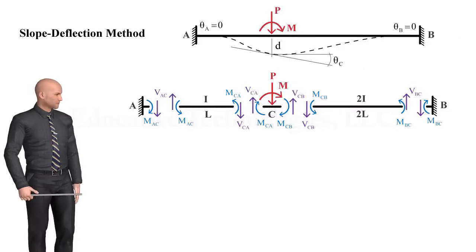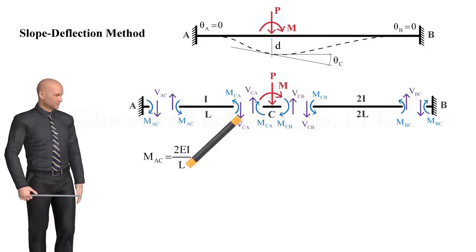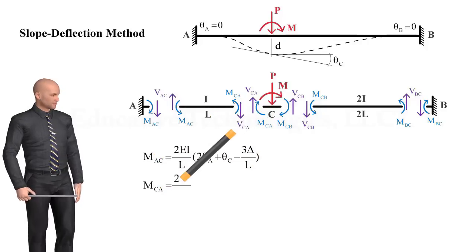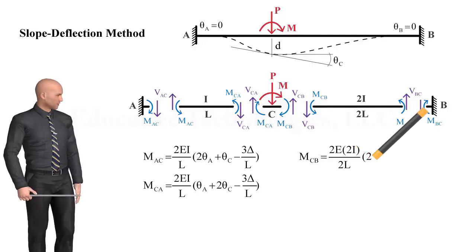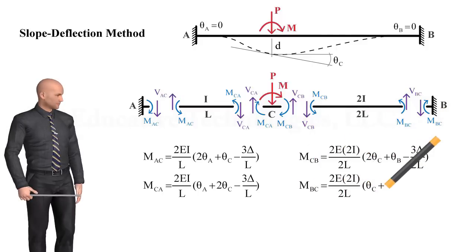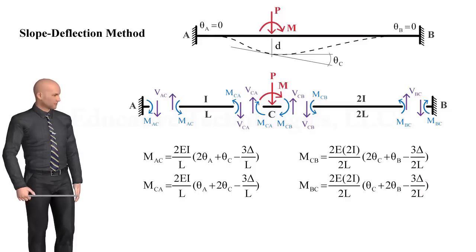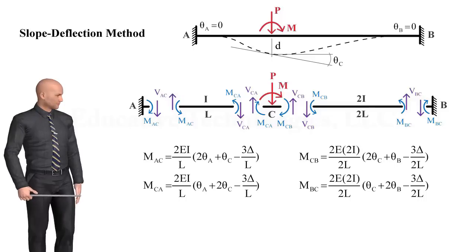We can then write the slope-deflection equations for each beam segment. For segment AC, we get... For segment CB, we can write... As you can see, since neither beam segment is subjected to any loads, the fixed-end-moment terms in these equations have vanished.